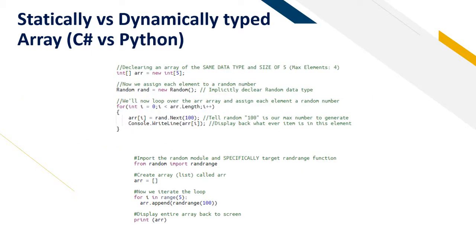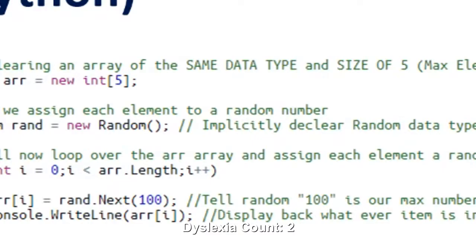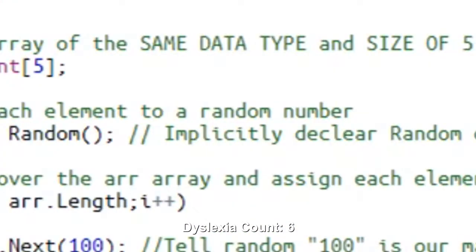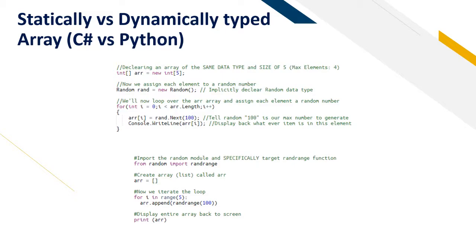The code at the top is written in C sharp so we have to state the array that we want to work with which is an array of integers. We have to specify how big the array is so the max size would be 5, which means that the max elements are 4. Now we have to assign a random object which creates a random number. We have to implicitly declare the random data type with a statically typed language. Now we will iterate over the loop with a random number between 0 to 100 as the maximum number and then we will write what number is in that index.